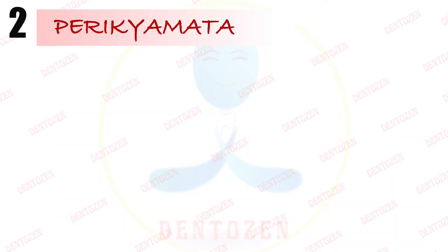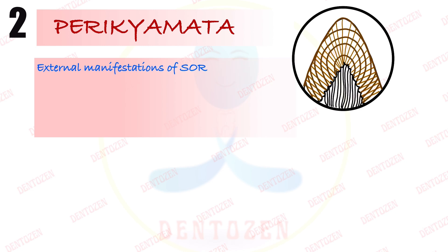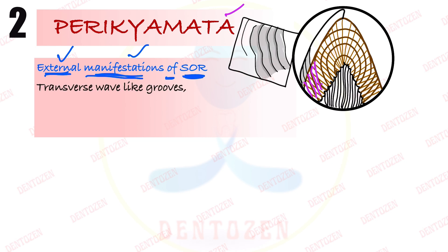Second is perichymata. Incremental lines of enamel are seen inside, and where they touch the surface we see perichymata. So perichymata are external manifestations of the striae of Retzius or incremental lines. These lines on the surface appear as transverse — that is, horizontal — wave-like grooves, which are depressions on the surface.